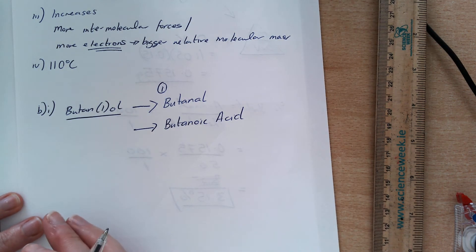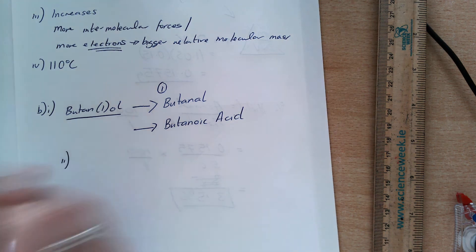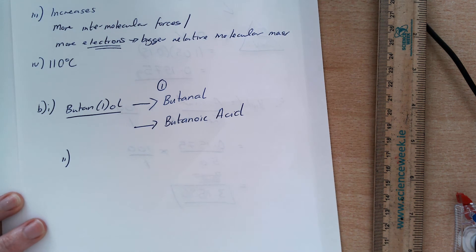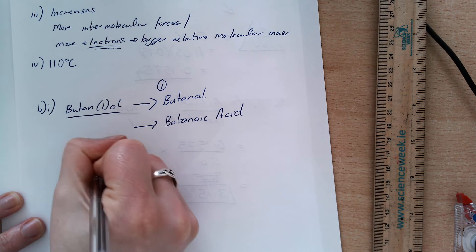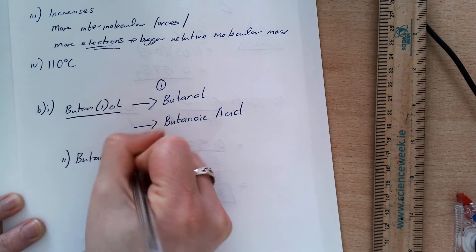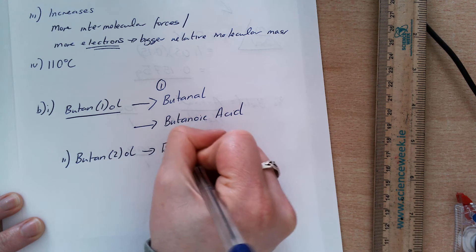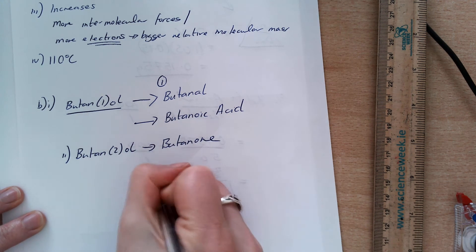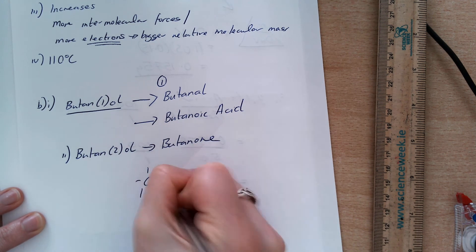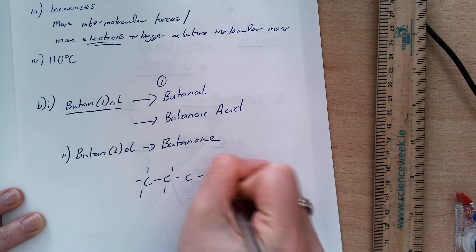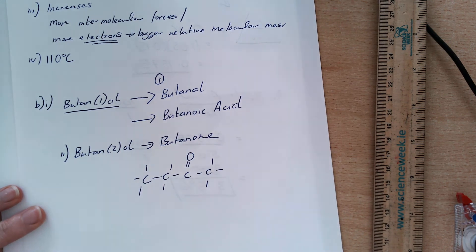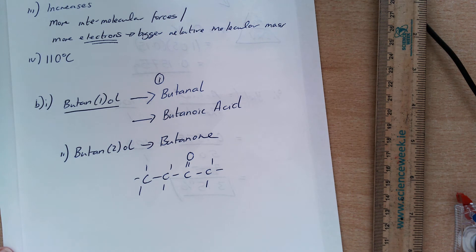Draw the structure of the organic product when butan-2-ol is oxidized in this way. So, butan-2-ol is going to create a ketone, which is butan-2-one. So, one, two, three, four carbons with a double bond O on the carbon here.